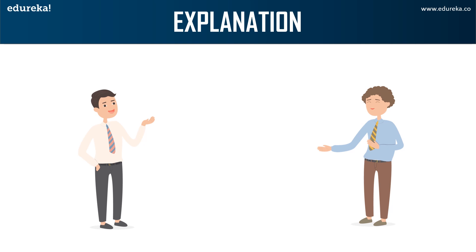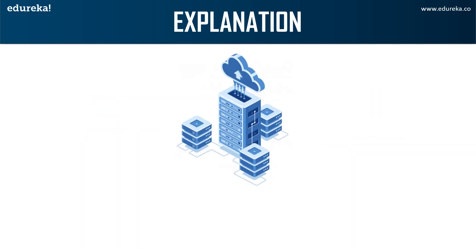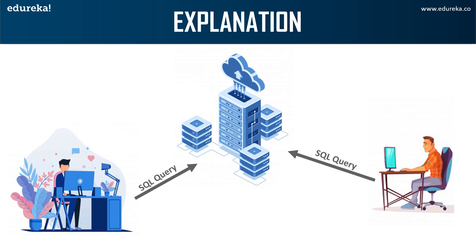To understand SQL in a better way, let's use an analogy. If two people want to communicate with each other, they have to use a language understood by both of them. Here, John wants to start a conversation with Dave and uses English. This language is known to Dave as well, so they continue their conversation. But what if one of them didn't understand the other? There would be no conversation at all. Relating this analogy, if we consider one person as the user and the other as the database, then the language used to communicate between these two is called SQL. Similarly, just as a language has grammar and rules, SQL has its own directives.